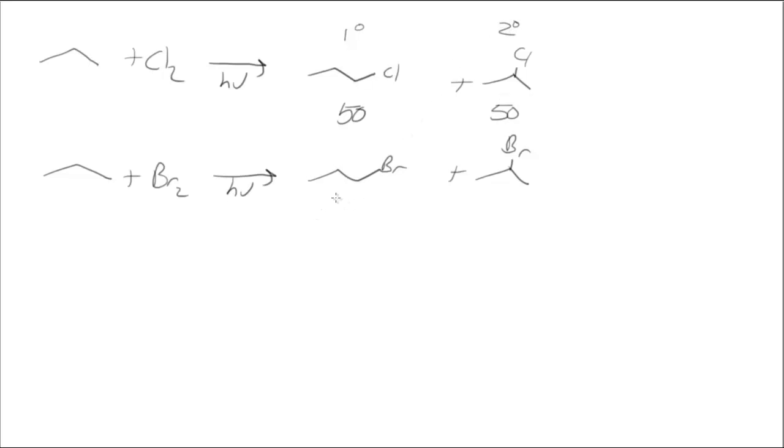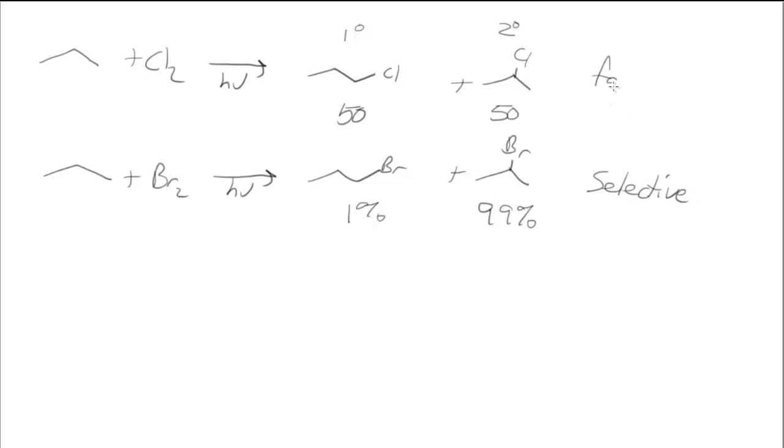However with bromine, because it's more selective, it's slower. It can wait and sort of find the lowest energy place to react. We only get 1% of the primary and 99% of the secondary. This one is selective. This one is fast and not selective.